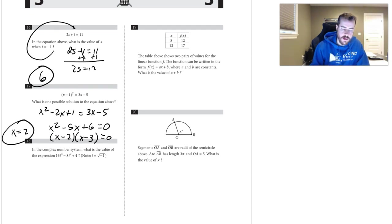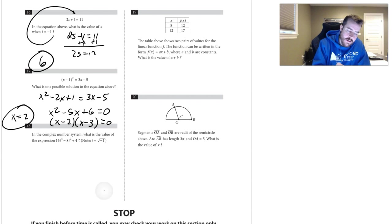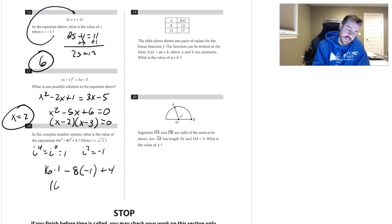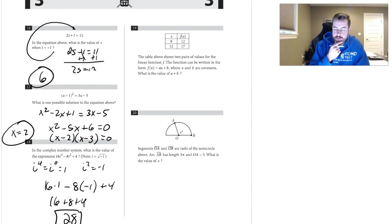Number eighteen: remember that i to the fourth equals i to the zero, which equals 1. So this becomes 16 times 1, minus 8 times negative 1 (since i squared equals negative 1), plus 4. That gives 16 plus 8 plus 4, which equals 28.